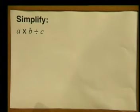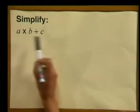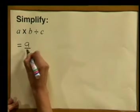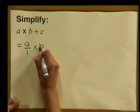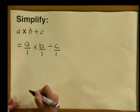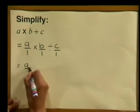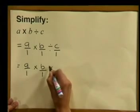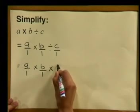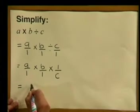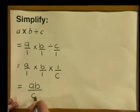Simplify A multiplied by B divided by C. Here there are no brackets, so we just work from left to right. So we write A divided by 1, multiplied by B divided by 1, divided by C divided by 1. We can write A divided by 1 times B divided by 1, then multiply and flip this around to write 1 divided by C. And when we simplify this, we get AB divided by C.